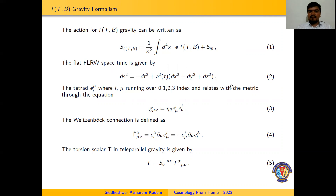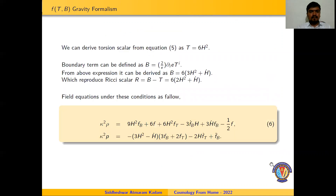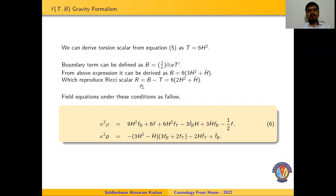In this framework, we have used flat FLRW spacetime, described in equation number 2, where A(t) represents the scale factor. The general metric g_μν and the Minkowski metric η_ij can be related by expression number 3. The Weitzenböck connection is defined in equation number 4. The torsion scalar T can be represented as a product of the superpotential and torsion tensor, described in equation number 5. Using this formalism, T = 6H² and B = 6(H² + Ḣ). The boundary term B relates the Ricci scalar R and torsion scalar T by R = B − T.